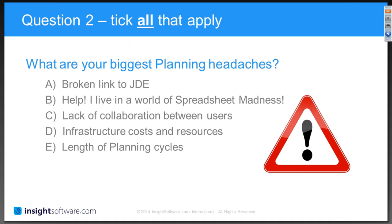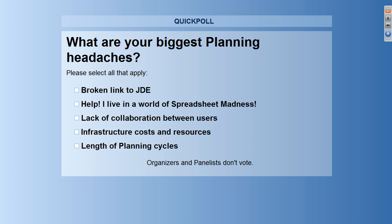Question number two: what are your biggest planning headaches? Please tick all that apply. Options are: a broken link to JD Edwards; help I live in a world of spreadsheet madness; lack of collaboration between users; infrastructure costs and resources; and length of planning cycles.